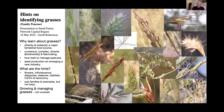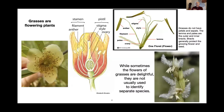Then we'll talk about quite a few examples of different grasses. What we're not going to cover is growing and managing grasses. Grasses are flowering plants — here you can see on the left a flower which has a lot of petals. When you look inside the flower it has the male and female sexual parts. Around the edge you can see filaments and anthers, which are the male parts, and then the stigma, style and ovary are all the female parts.